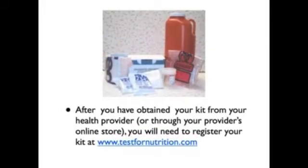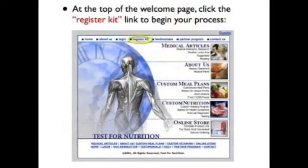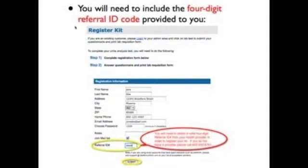After you have obtained your kit from your health provider or through your provider's online store, you will need to register your kit at www.testfornutrition.com. At the top of the website page, click on the register kit link to begin your process. You will need to complete all the information requested on the kit registration page and include the four-digit referral ID code that was provided to you by your health provider.